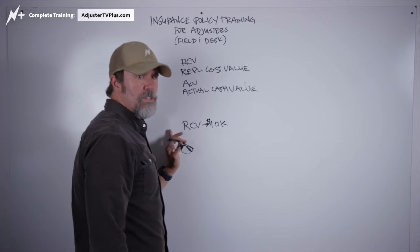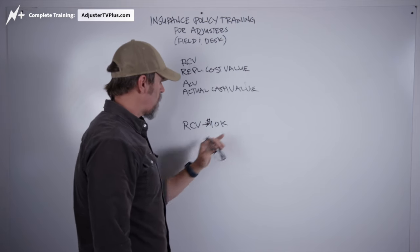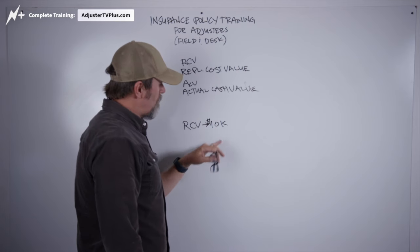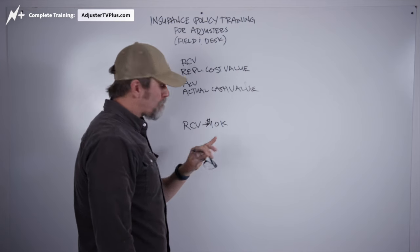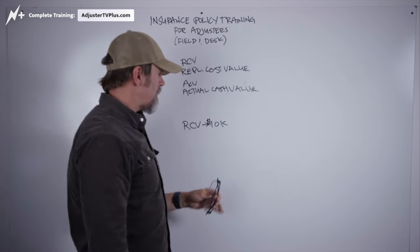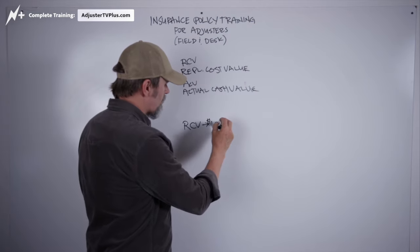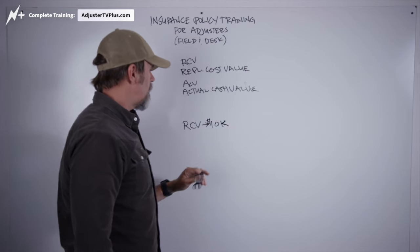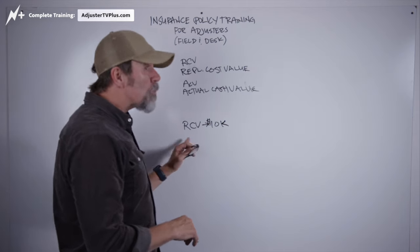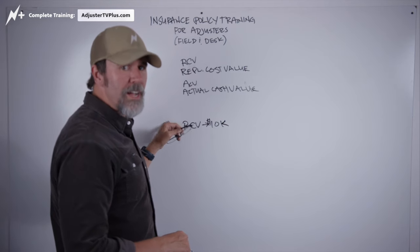So somebody, some other adjuster handled this and got them going and settled up for $10,000, but in the course of the contractor getting in there, I found a bunch more damage, and it seemed like the extent of that was a lot more, so they had to reopen the file for a supplement.